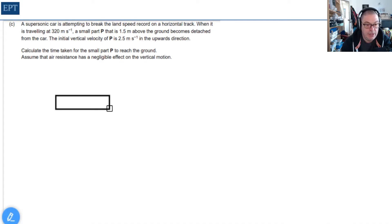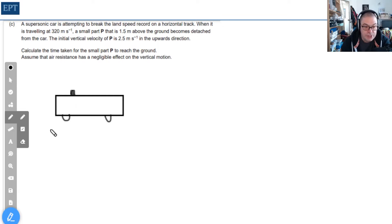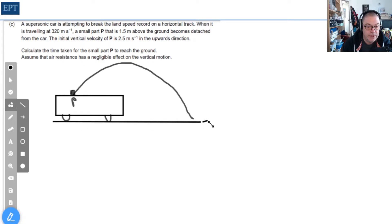In the next part, we have a car traveling super fast with component P that magically launches up into the air in a vertical motion at 2.5 meters per second. We have to find the time of flight for part P. The car is moving to the right, so part P follows some kind of parabola and hits the floor. What's nice is the question gives us the components from the get-go, so we don't have to work them out.